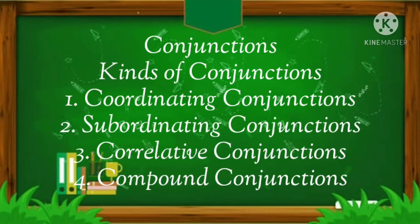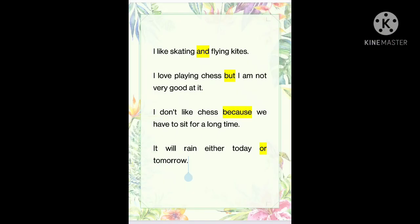We are going to learn about the kinds of conjunctions like coordinating conjunctions, subordinating conjunctions, correlative conjunctions and compound conjunctions. Let's read these sentences.